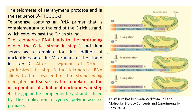Let's see how replication takes place, using Tetrahymena protozoa as an example. The telomere end of Tetrahymena protozoa has the sequence T2G4 (TTGGGG). Telomerase contains an RNA primer with a sequence complementary to the end of the telomere's repeated sequence. This RNA primer is complementary to the g-rich strand, which extends past the c-rich strand. In the first step, the telomerase with its RNA binds to the extended portion of the chromosome — specifically the protruding end of the g-rich strand.